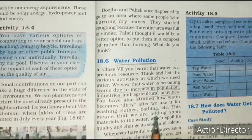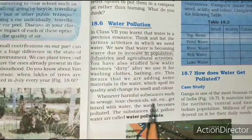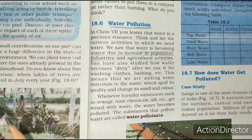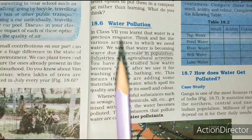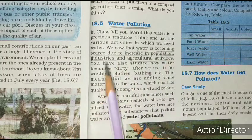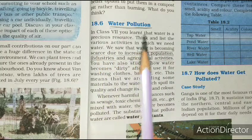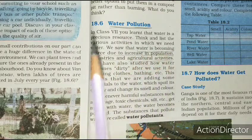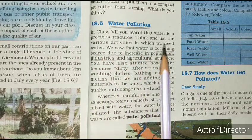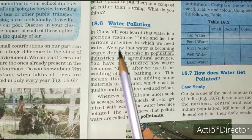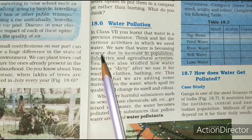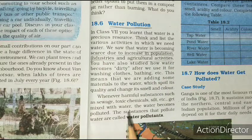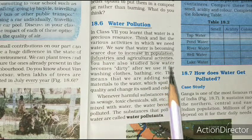Now the second topic is water pollution. We have already read about air pollution; let us now discuss about water pollution in detail. In class 7th, you learnt that water is a precious resource. Think and list the various activities in which we need water. We saw that water is becoming scarce due to increase in population. You all know that water is one of the most important things - we cannot survive without water.